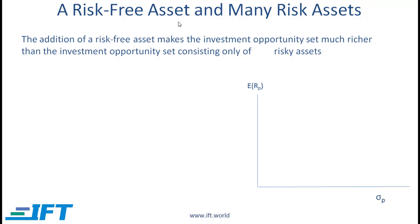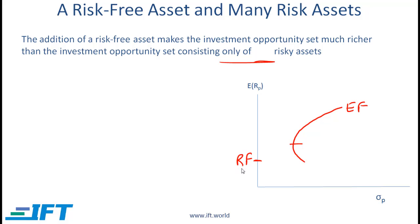Now let's add a risk-free asset to our mix. The addition of a risk-free asset makes the investment opportunity set much richer than the set of only risky assets. With only risky assets we had the minimum variance frontier and the efficient frontier. Now we also have a risk-free asset — notice that this is outside the efficient frontier. So we can invest in this risk-free asset and also invest in portfolios on the efficient frontier, meaning there should be a way of combining the risk-free asset with one or more of these portfolios.